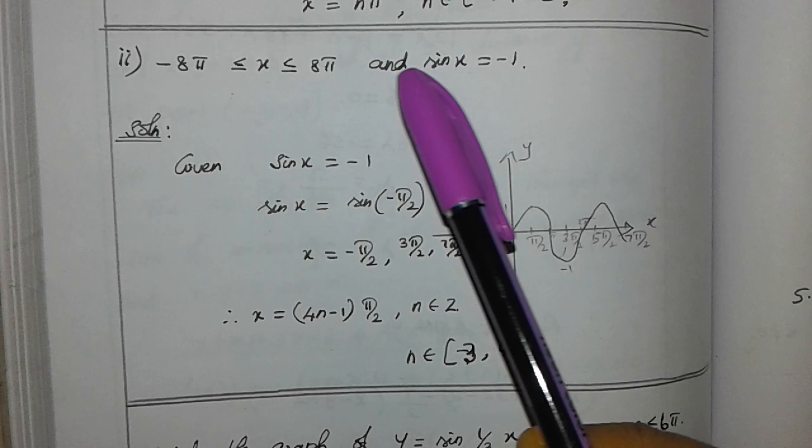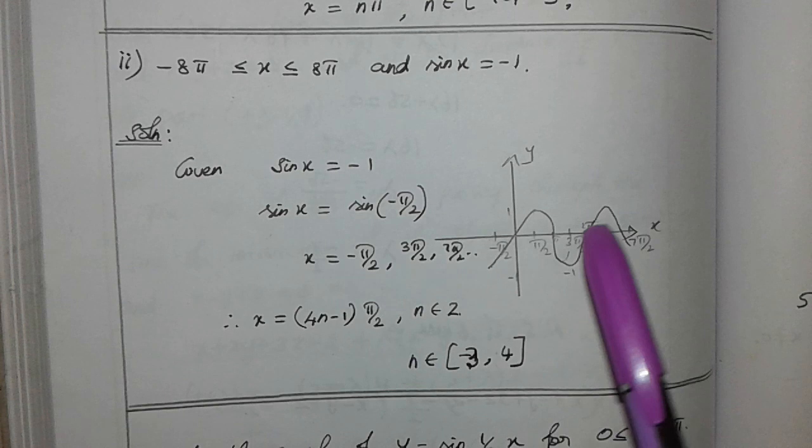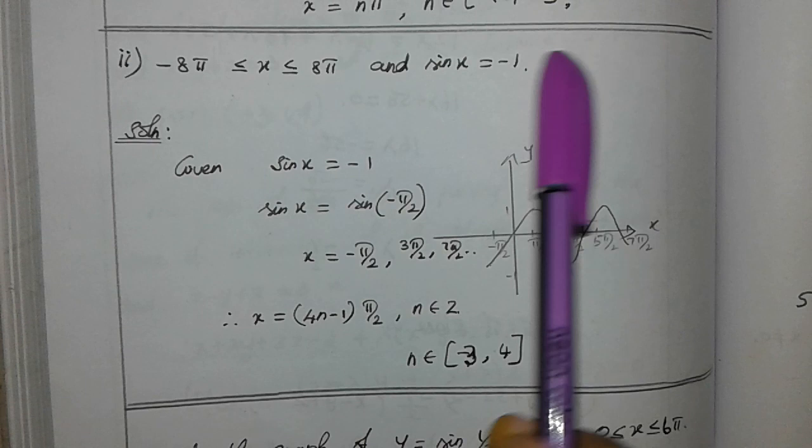If we say x is equal to nπ, we can create a general form. If we say (4n minus 1) into π by 2, n belongs to Z.